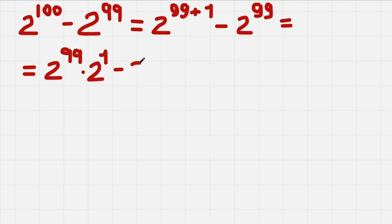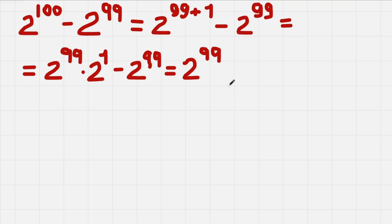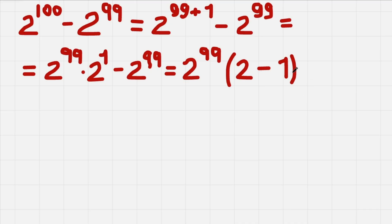So now we get this equation. If you are a bit experienced in math, you can see that we have 2 to the power of 99 appearing twice. So we can factor it out in front of the brackets. We have 2 to the power of 99, and inside the brackets we are left with 2 to the power of 1 — which is just 2 — and then minus 1, not minus 2 to the power of 99, because that's already factored out.